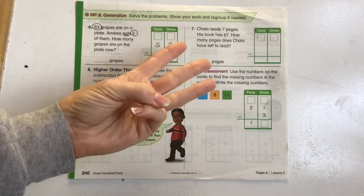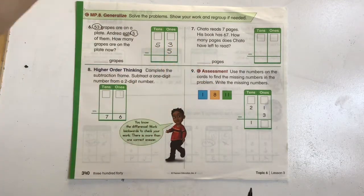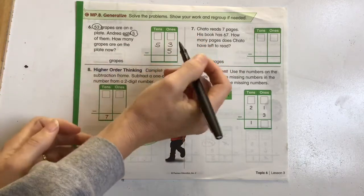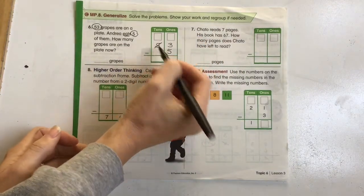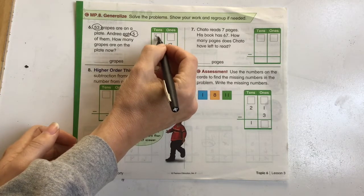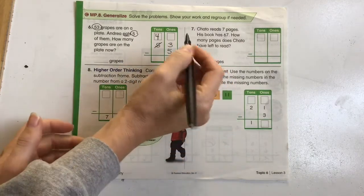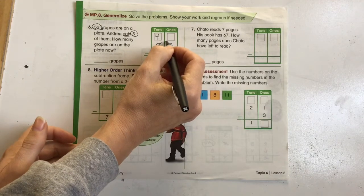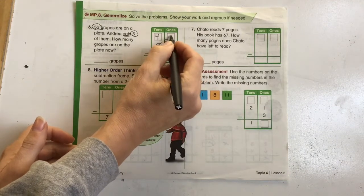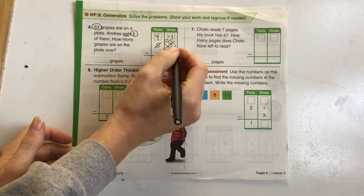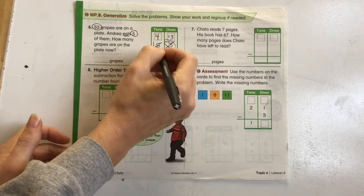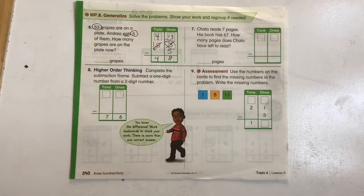So 53 minus 5. We have 3 minus 5. 3 again minus 5, that's not going to work, so we're going to need to regroup. We're going to take one group of 10 over here. 5 minus 1 group of 10 is going to be 4 groups of 10. And then we're going to add that 1 group of 10 over here to the top number. 10 plus 3 becomes 13. 13 minus 5 is 8. We're going to take our 4, drop it straight down to 48.